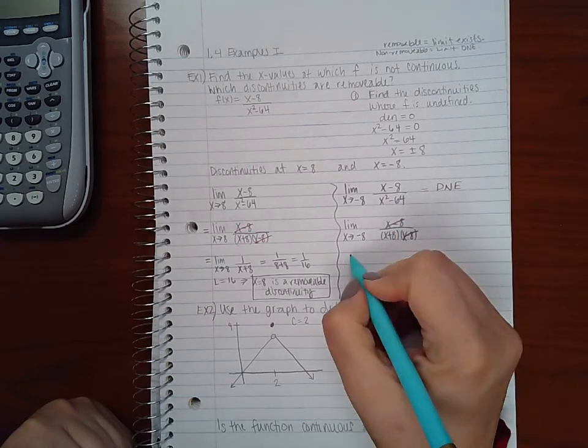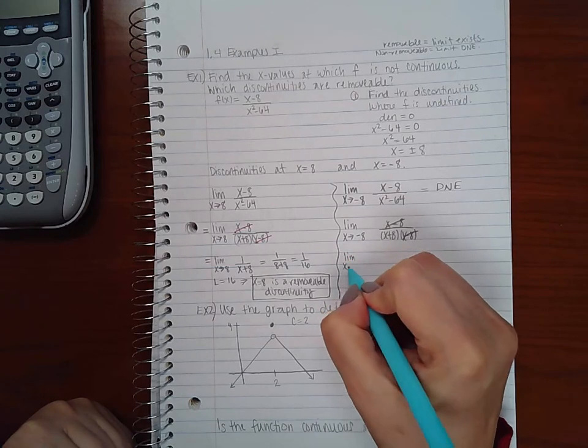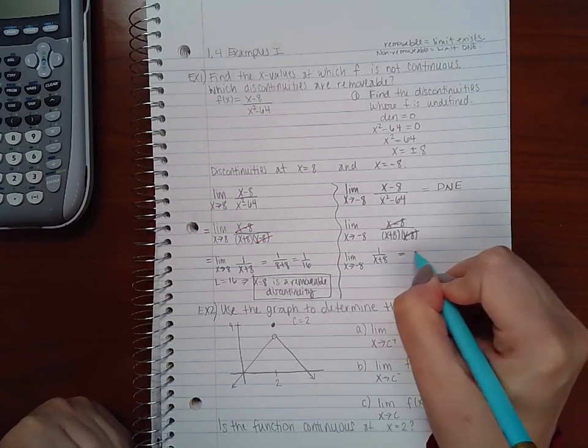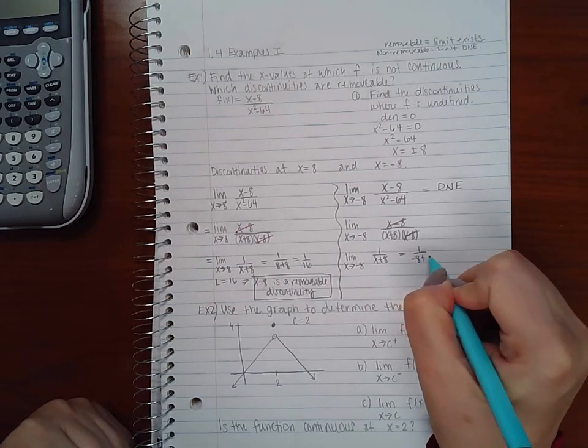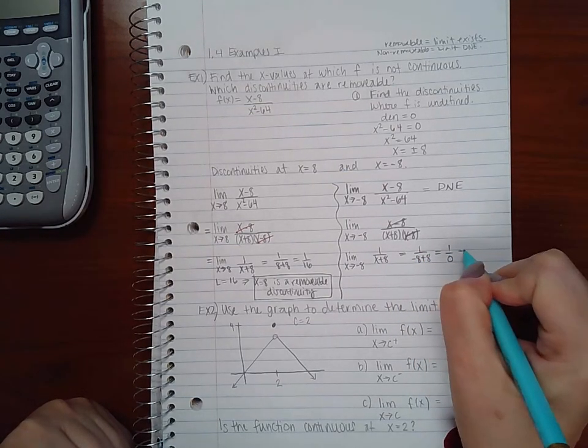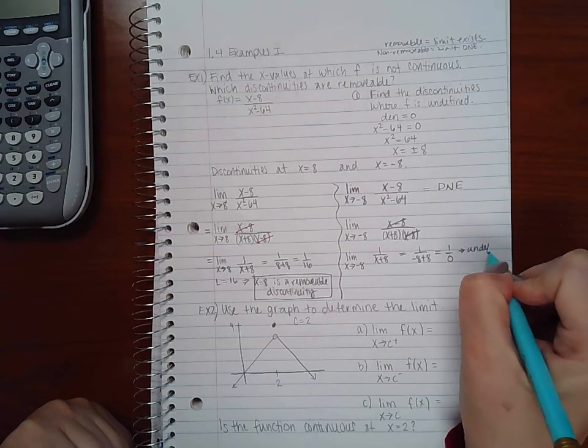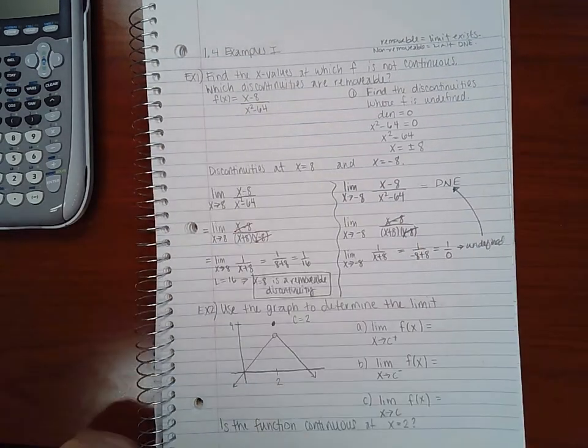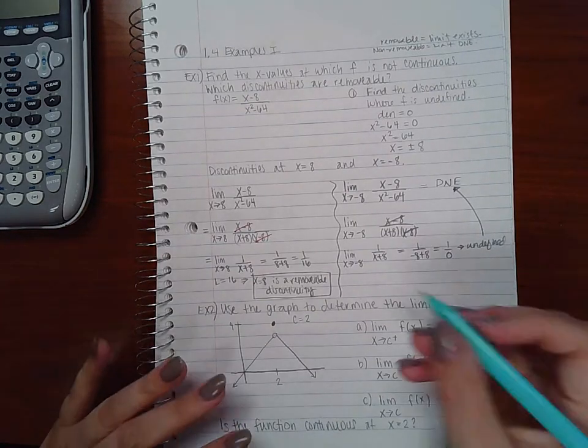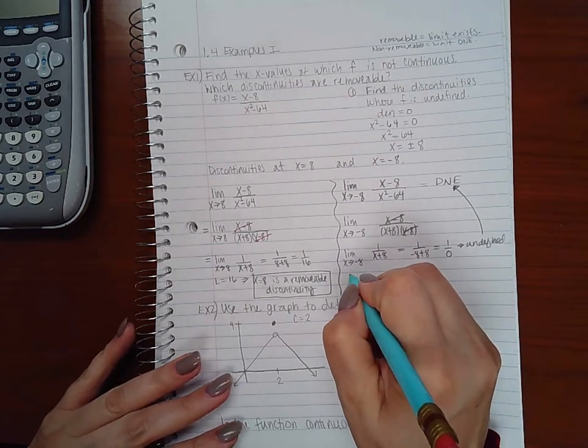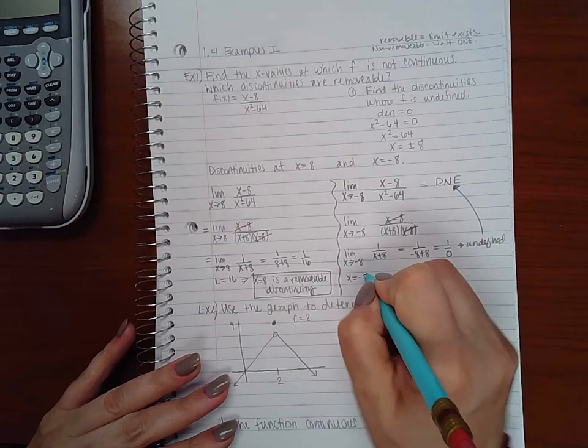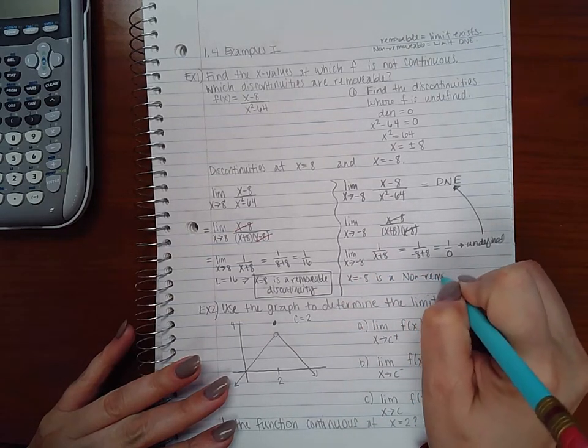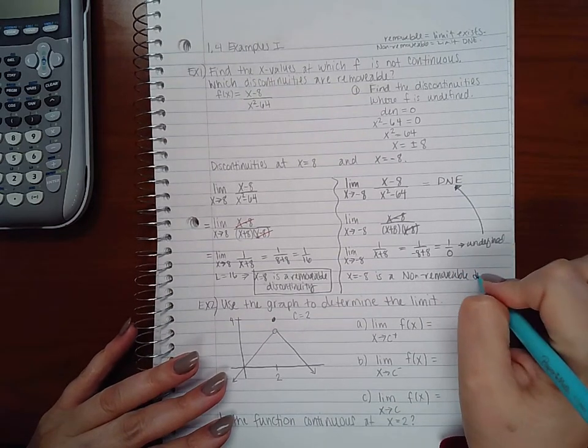If you wanted to work it out the same way as you did the previous one, you'll notice that it doesn't really help any. So if you factor out and you cancel, you get 1 over x plus 8. You still get 1 over negative 8 plus 8 which is 1 over 0 which is undefined, which still leads you to the same conclusion that the limit does not exist. So in this case because the limit does not exist, x equal to negative 8 is a non-removable discontinuity.